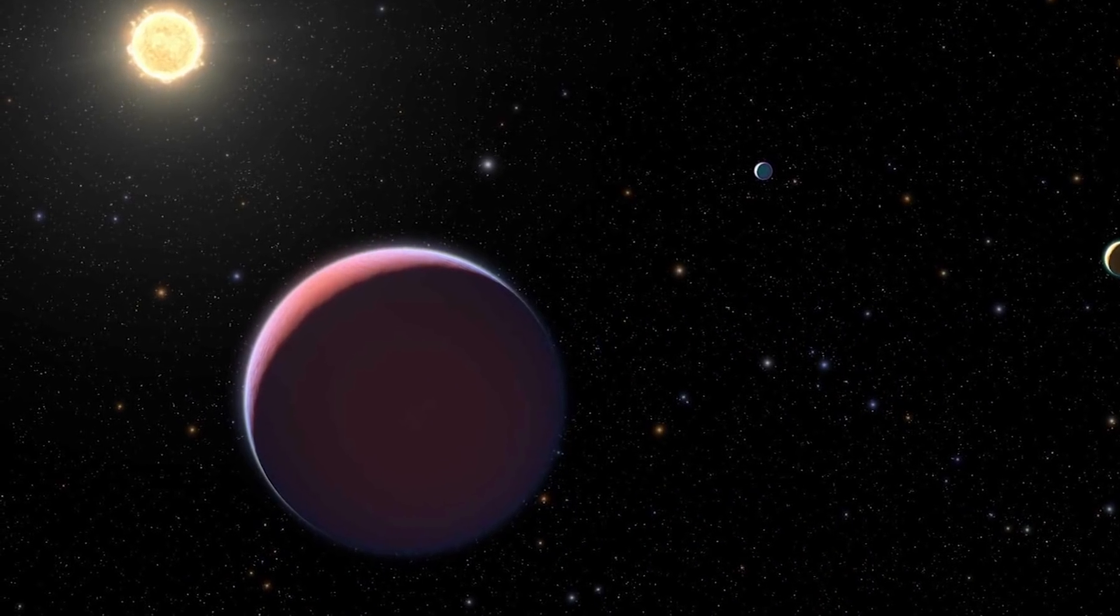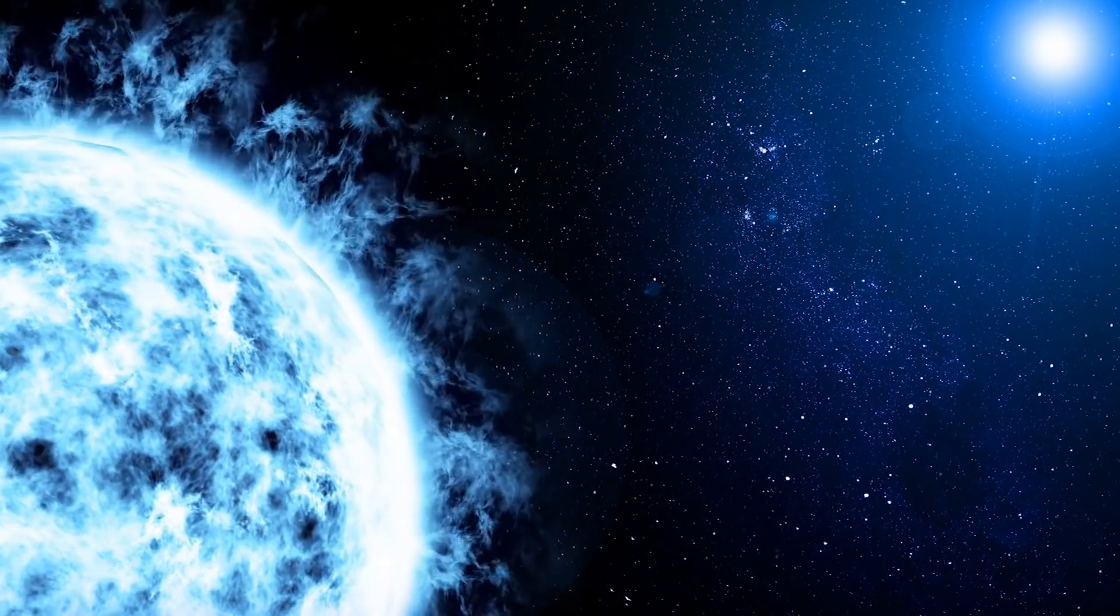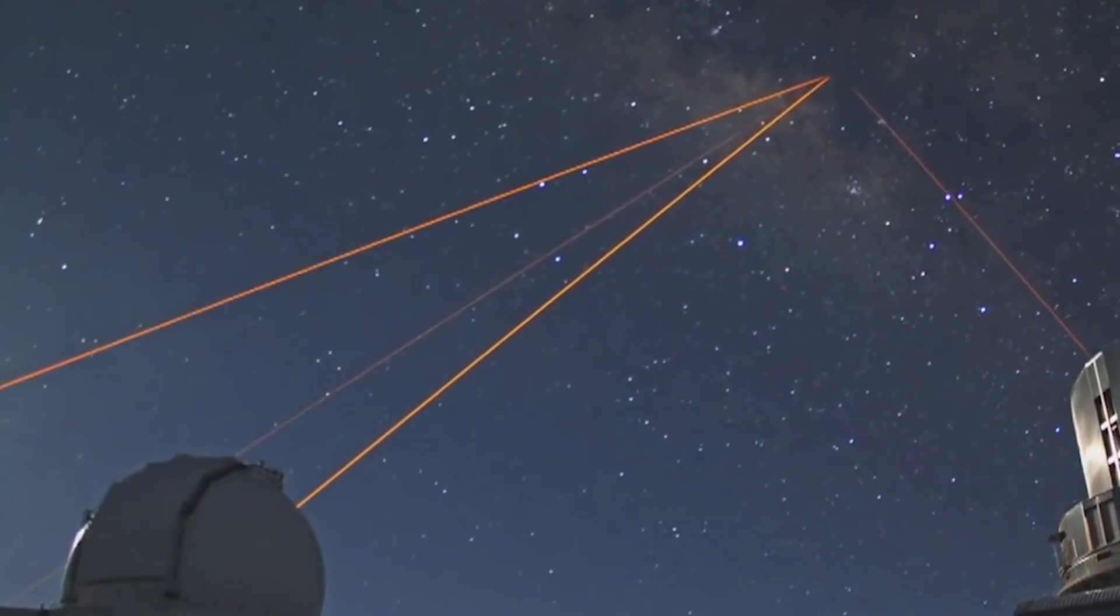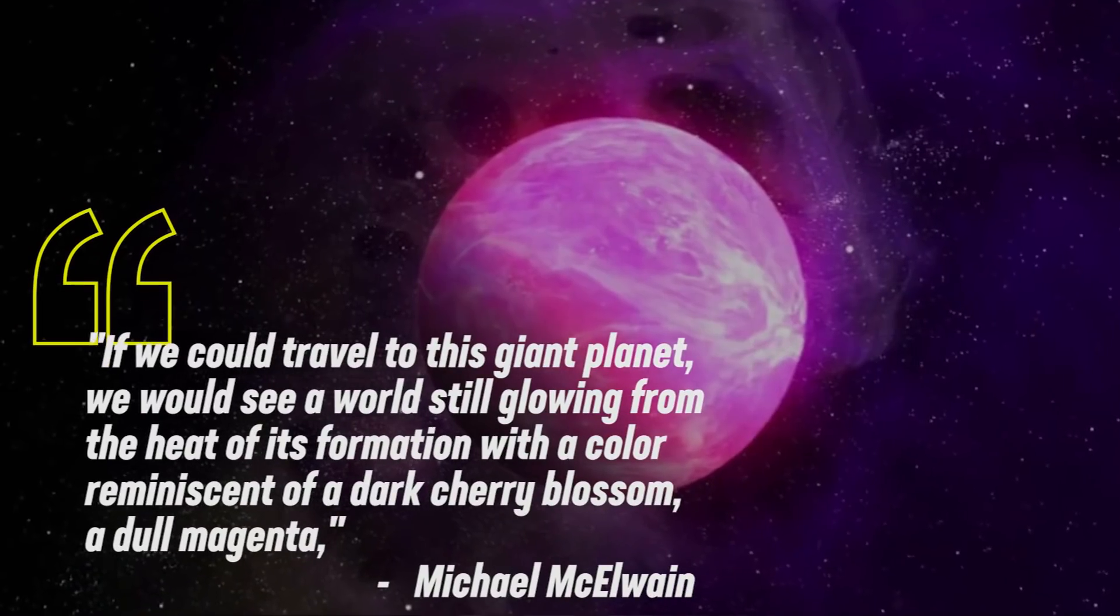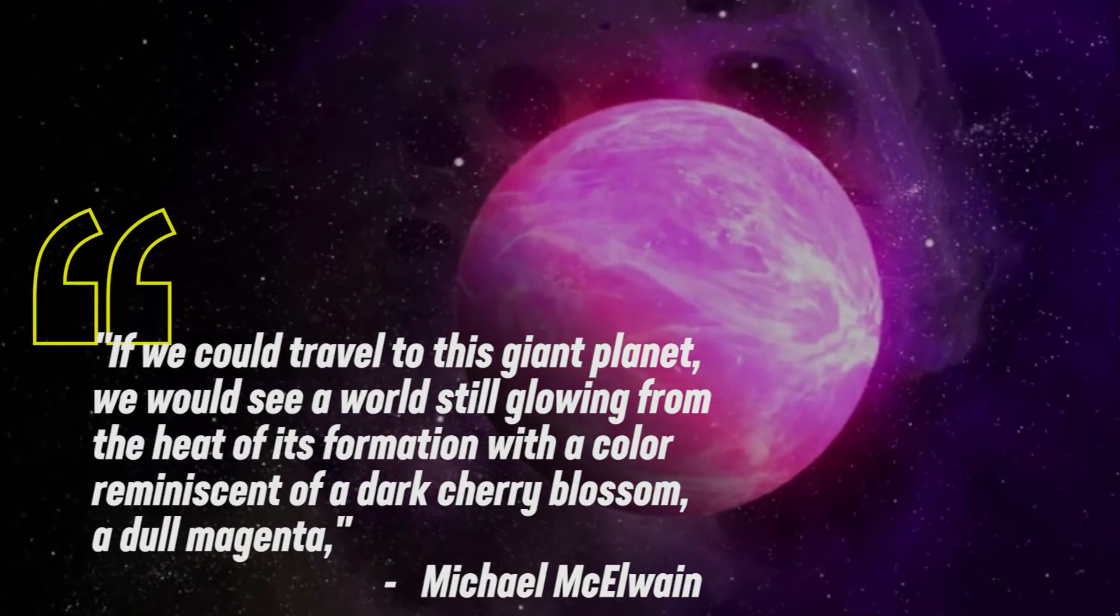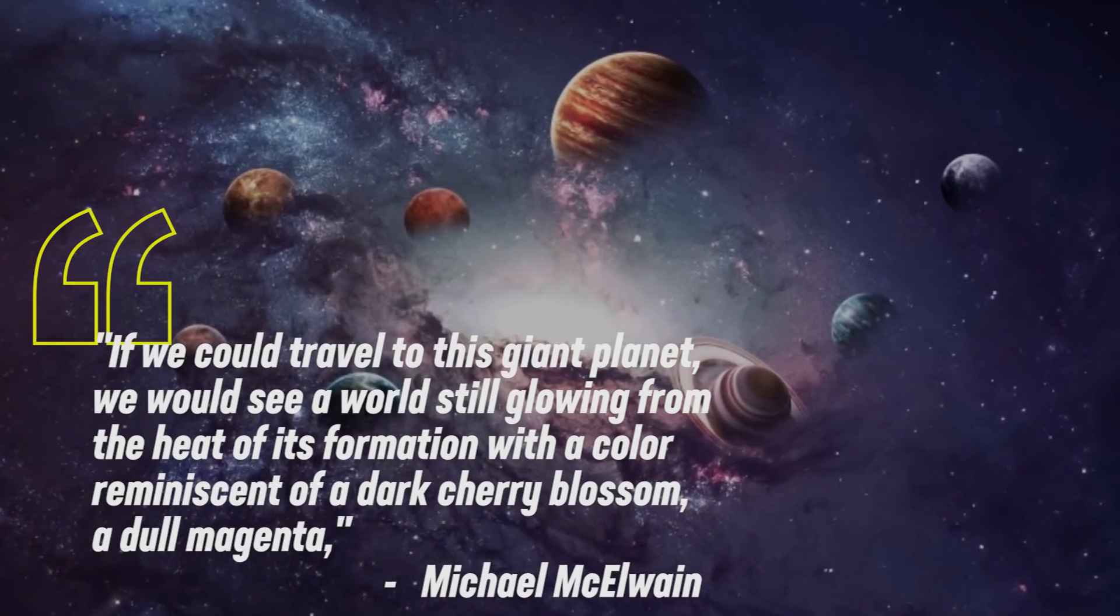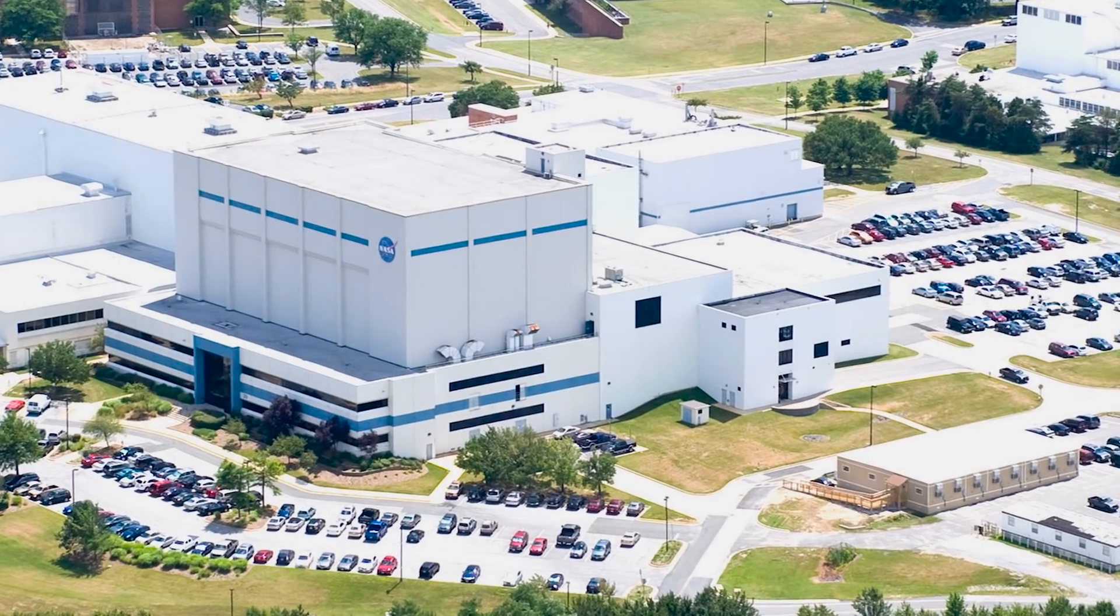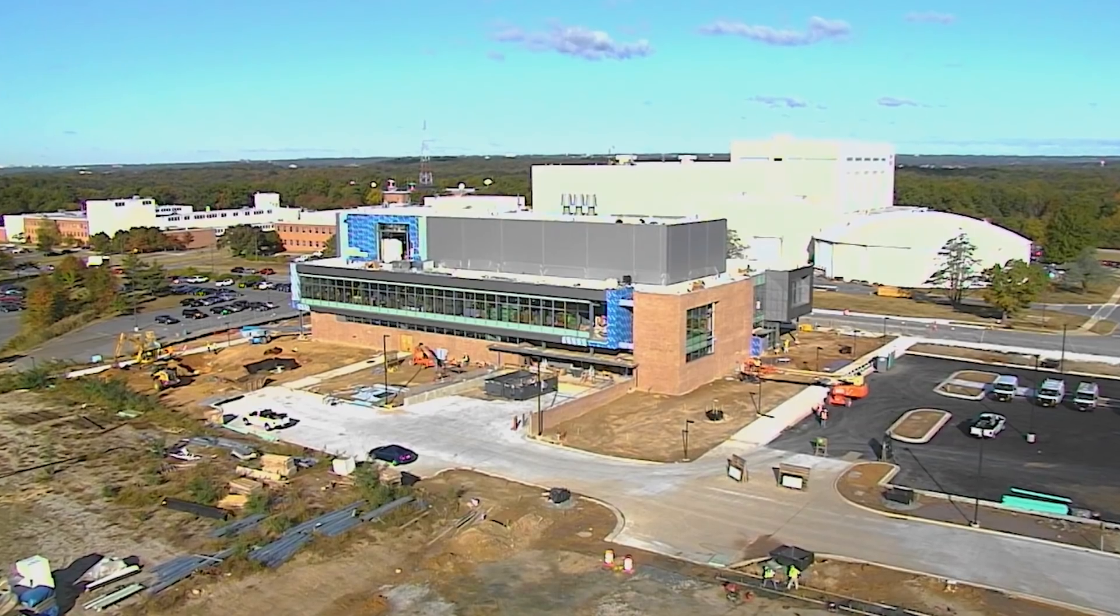The alien planet, GJ504b, is a colder and bluer world than astronomers had anticipated, and it likely has a dark magenta hue, infrared data from the Subaru Telescope in Hawaii revealed. If we could travel to this giant planet, we would see a world still glowing from the heat of its formation with a colour reminiscent of a dark cherry blossom, a dull magenta. Study researcher Michael McElwain of NASA's Goddard Space Flight Centre in Greenbelt, Maryland, said in a statement from the Space Agency.